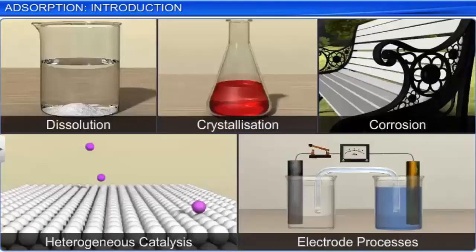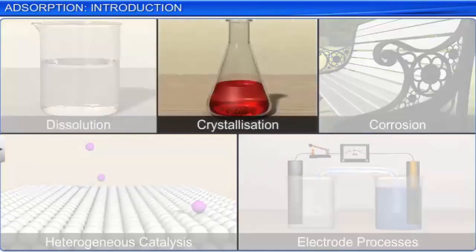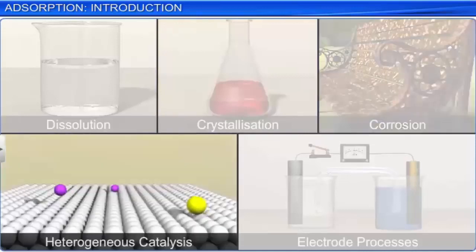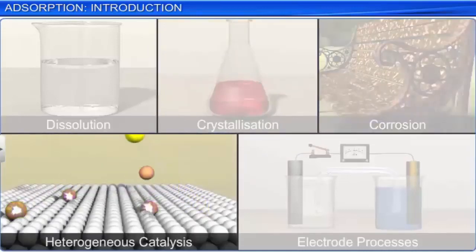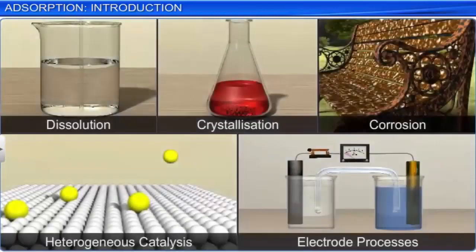Surface chemistry is an important branch of chemistry as a number of phenomena like dissolution, crystallization, corrosion, heterogeneous catalysis and electrode processes occur at an interface.